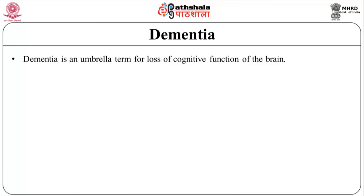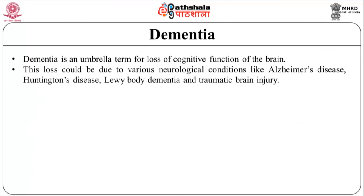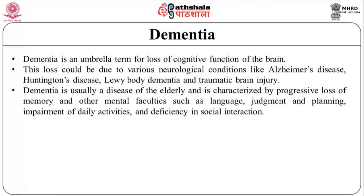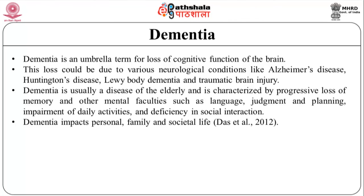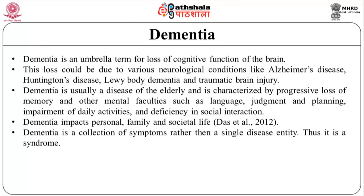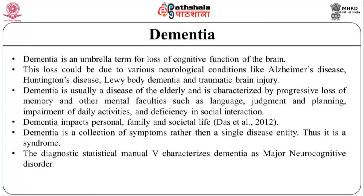Now we will discuss dementia. Dementia is an umbrella term for loss of cognitive function of the brain. This loss could be due to various neurological conditions like Alzheimer's disease, Huntington's disease, Lewy body dementia, and traumatic brain injury. Dementia is usually a disease of the elderly and is characterized by progressive loss of memory and other mental faculties such as language, judgment, and planning, impairment of daily activities, and deficiency in social interaction. Dementia impacts personal, family, and societal life. Dementia is a collection of symptoms rather than a single disease entity — thus it is a syndrome. The Diagnostic and Statistical Manual 5th characterizes dementia as a major neurocognitive disorder.